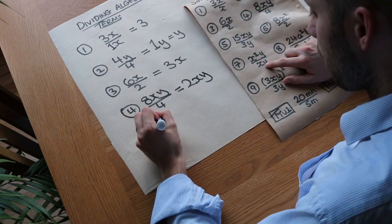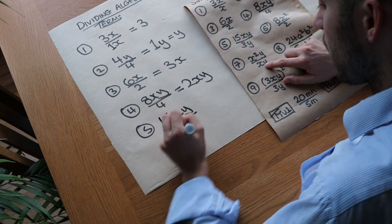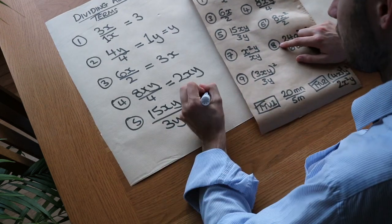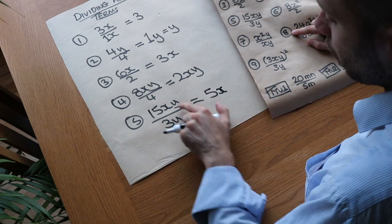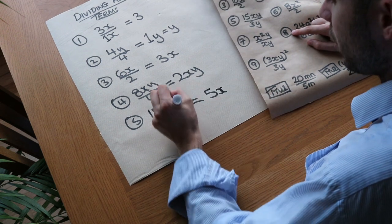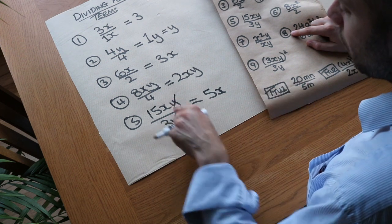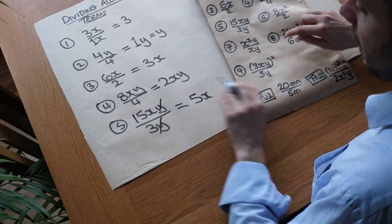What about 5? We have 15xy divided by 3y. Now there's more going on here. Let's divide the numbers first. We've got 15 divided by 3 is 5. X divided by, well there's nothing there, so it's still x. And we've got y divided by y. They cancel. If you want you can put a cross through them because they cancel each other out. We're effectively dividing top and bottom of this fraction by y and that just disappears. So it's going to be 5x.